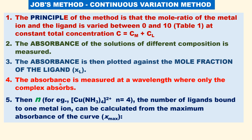The absorbance is measured at a specific wavelength where only the complex absorbs — we need to be very careful to measure at a wavelength where the complex absorbs. From this plot, the n value is obtained. For example, in the tetraammine complex, n equals 4. So the number of ligands bound to one metal ion can be calculated from the absorption maximum of the curve.